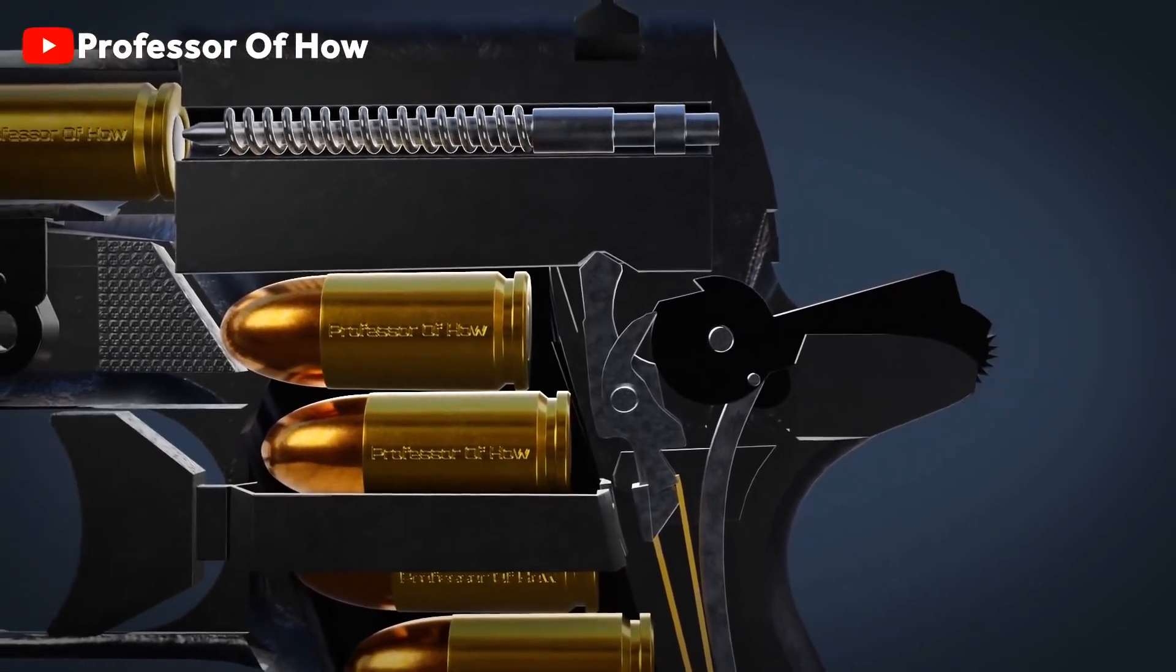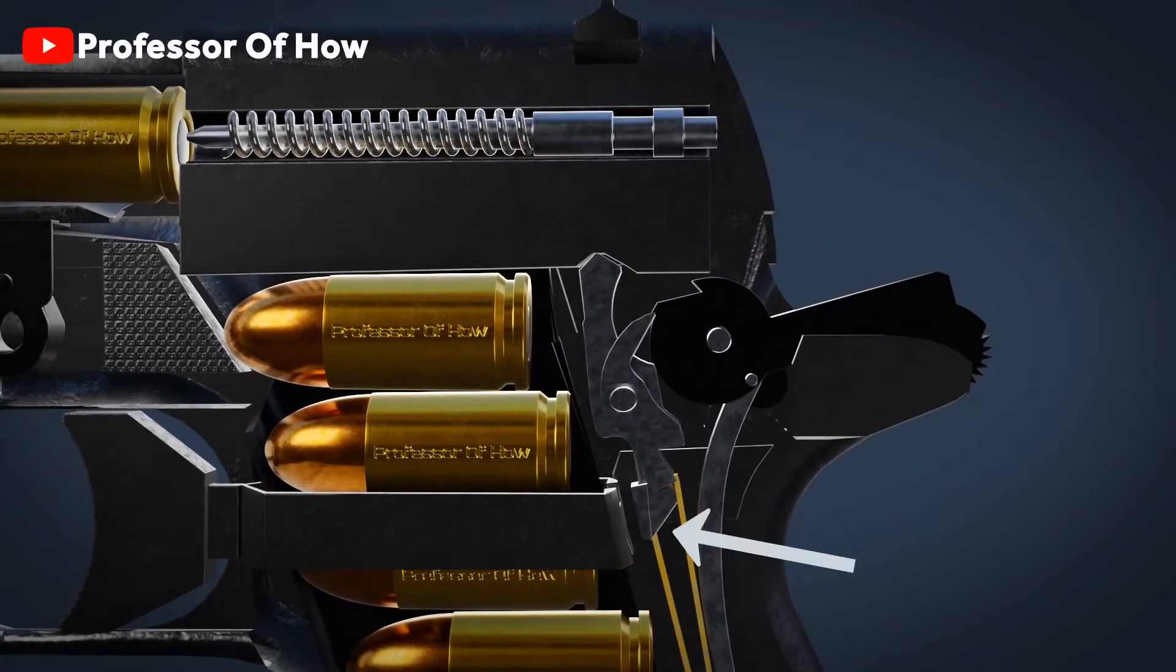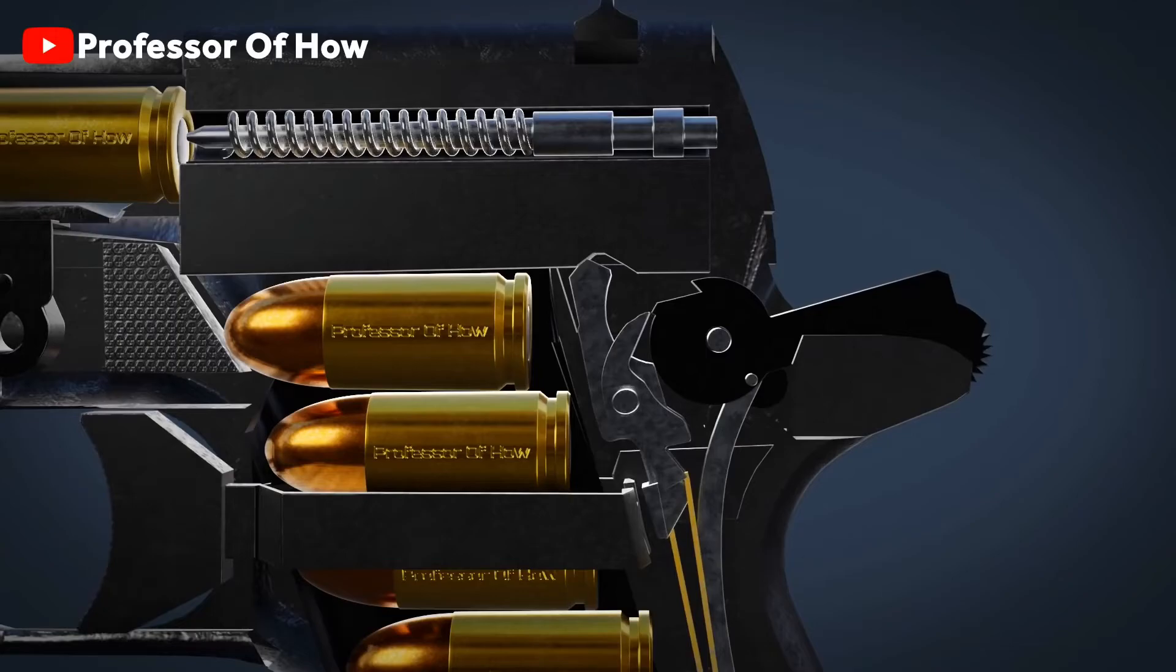So now, this gun is ready to fire the second round. Now you will press the trigger to fire the second round. First, the trigger will push the disconnector, then the disconnector will push the sear, and the sear will set the hammer free. And so on.